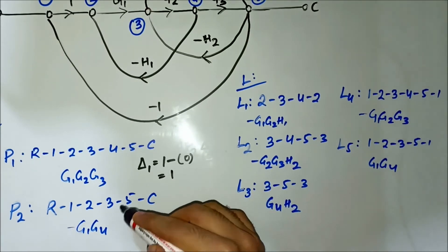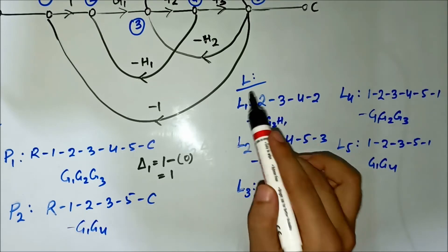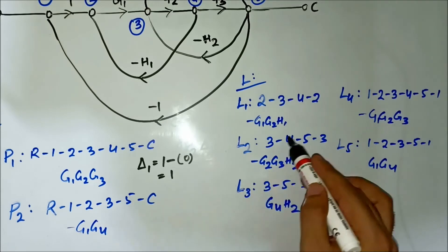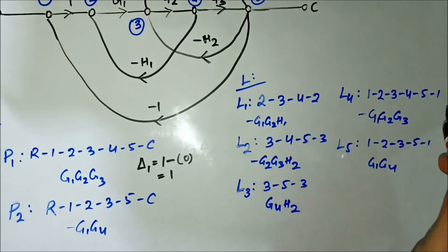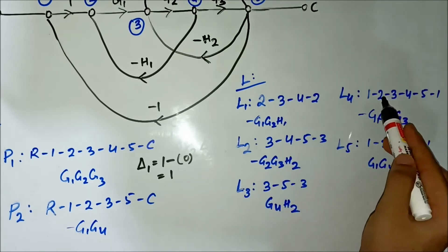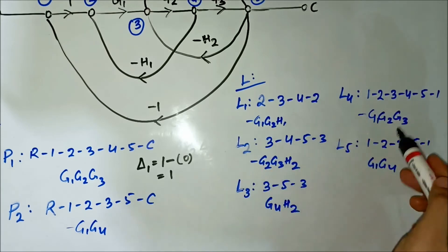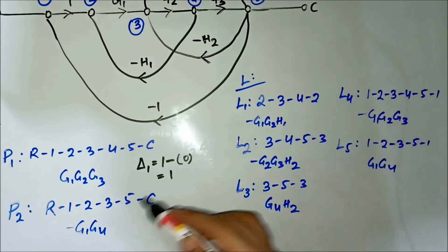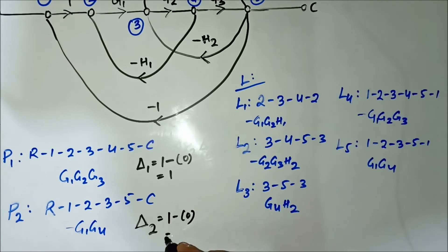For forward path P2 (R→1→2→3→5→C), comparing with all loops: nodes 2 and 3 are common with L1 through L5, so P2 also touches all loops. Therefore Δ2 = 1 − 0 = 1.